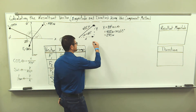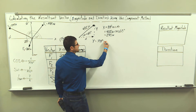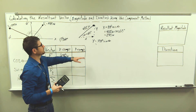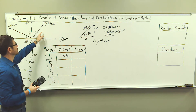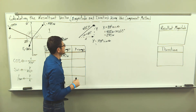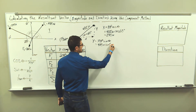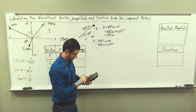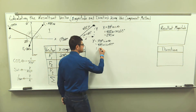For the y component, we know that the y component is equal to the hypotenuse times sine of angle theta. We are moving in a positive y direction, so we know that all of the y values in quadrant one are positive. So we have 480 newtons times sine of 60 degrees, which is equal to 415.7 newtons.